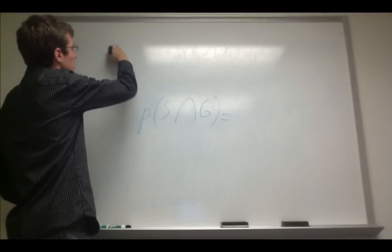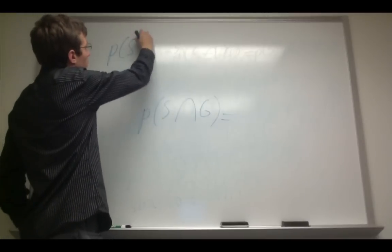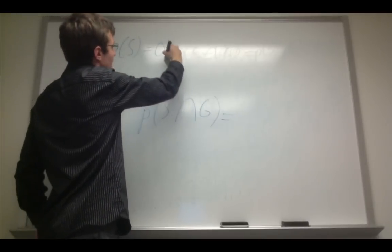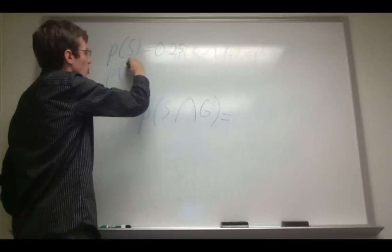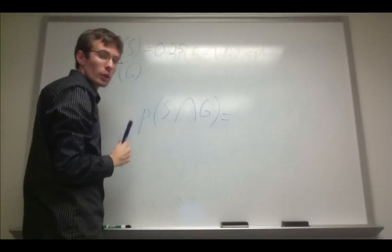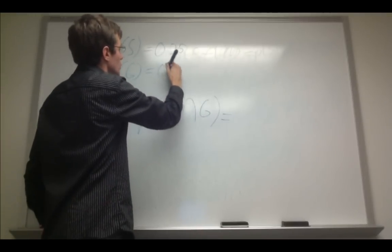So let's write down some probabilities here. The probability of being a sophomore, let's say, is 0.25. And the probability of randomly drawing somebody from the population who likes grape soda is 0.7.